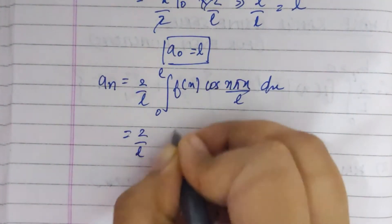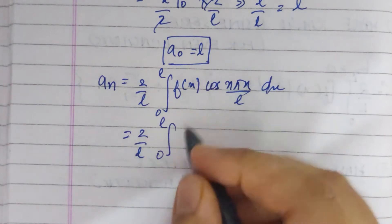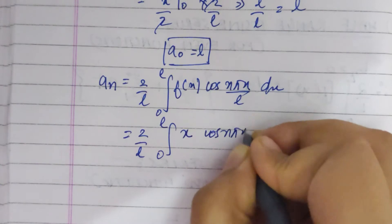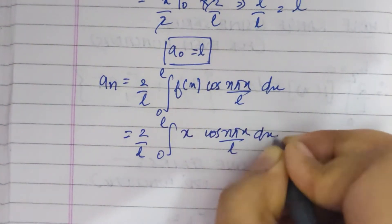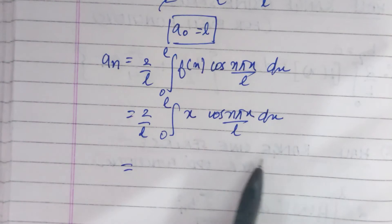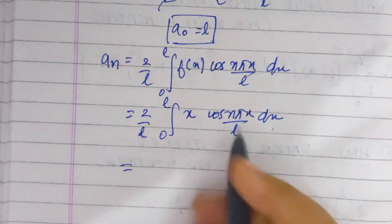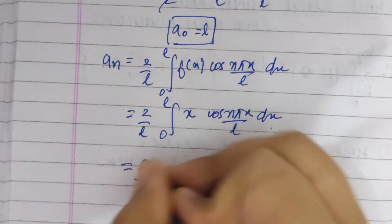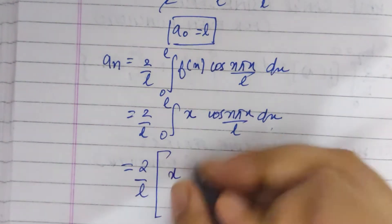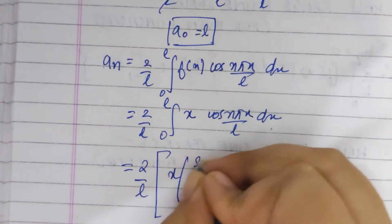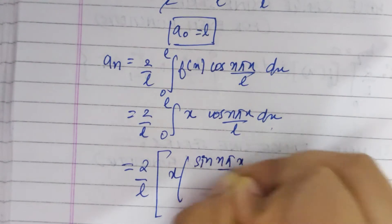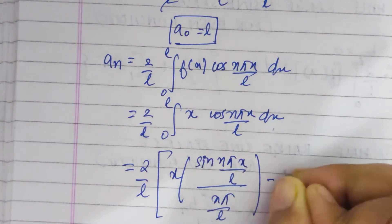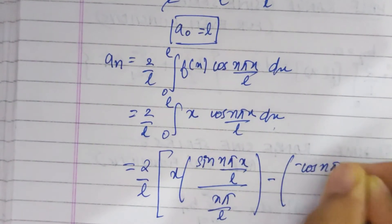That is 2 by l from 0 to l of x times cos(n pi x by l) dx. Using the ILATE rule and the UV rule, after integrating we get x times sin(n pi x by l) divided by (n pi by l) minus minus cos(n pi x by l) divided by...